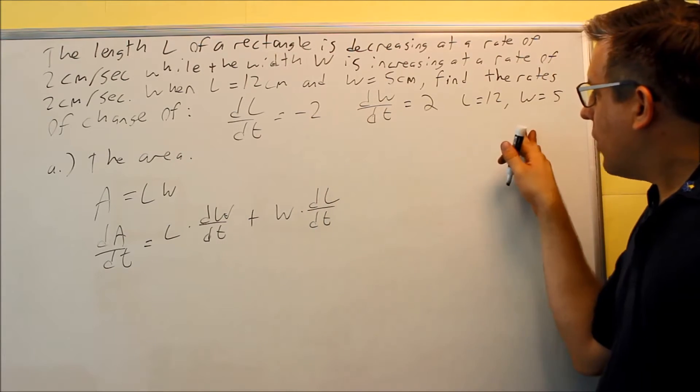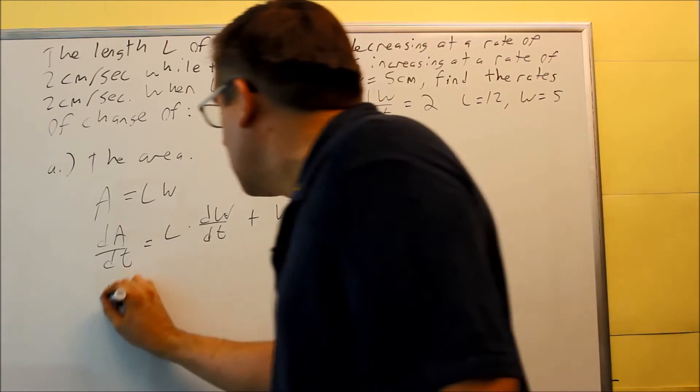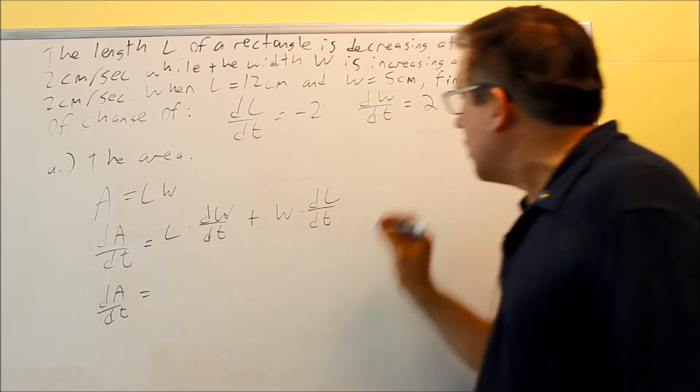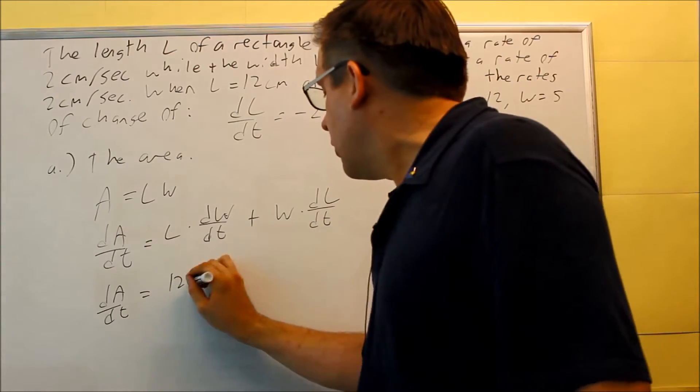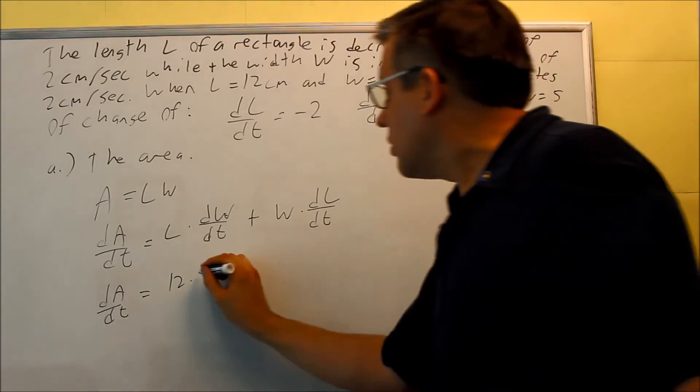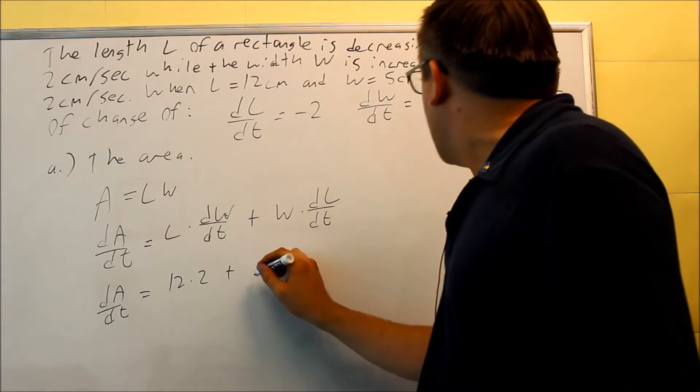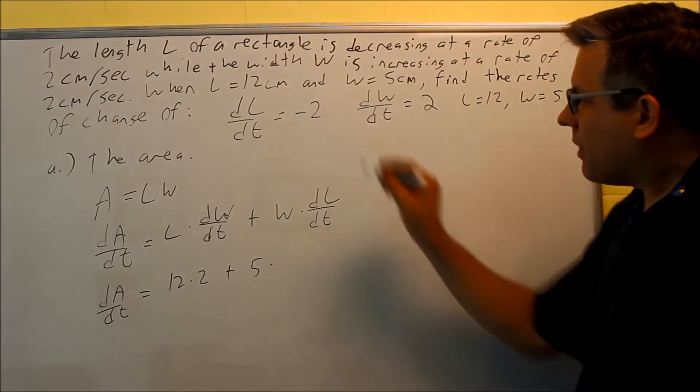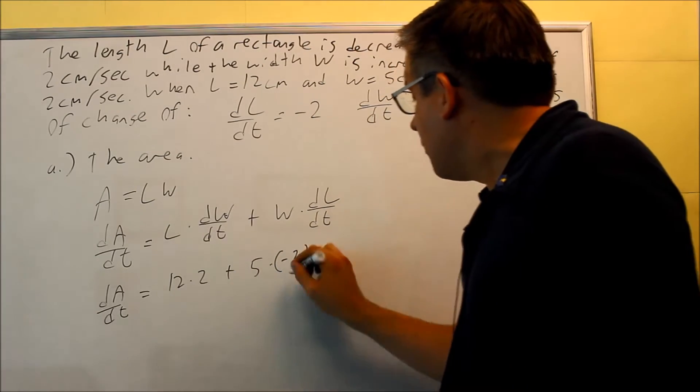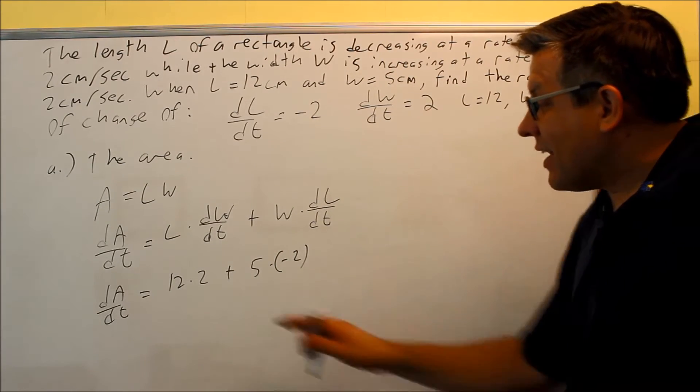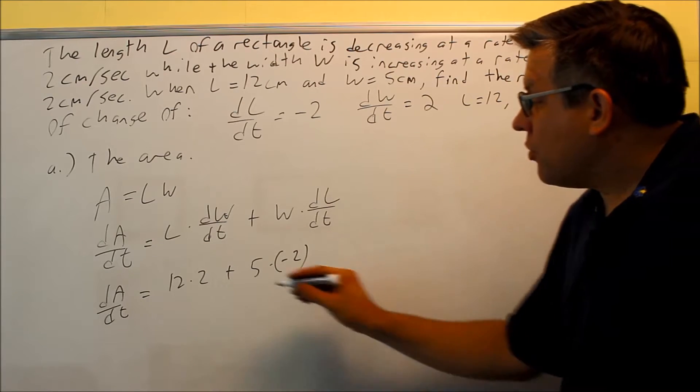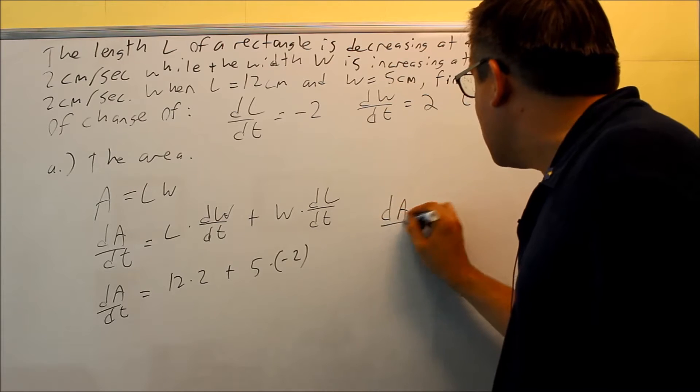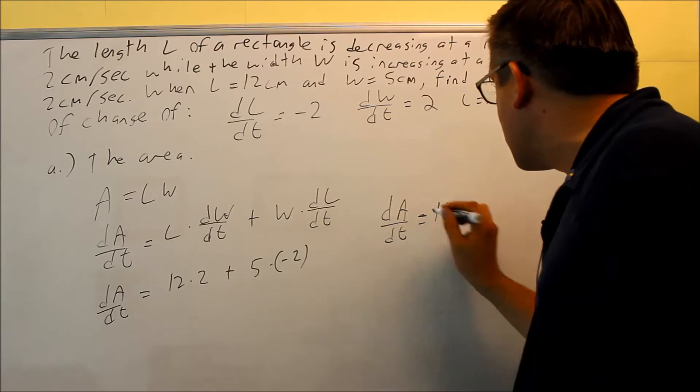I have all the information I need to plug in here to get the answer. So dA/dt equals the length, 12, dW/dt is 2, and then I have W is given as 5, dL/dt, remember it's negative, so negative 2 goes in there. Now I just need to compute this, 24 minus 10 is 14. That means that my dA/dt, the numerical value is 14.